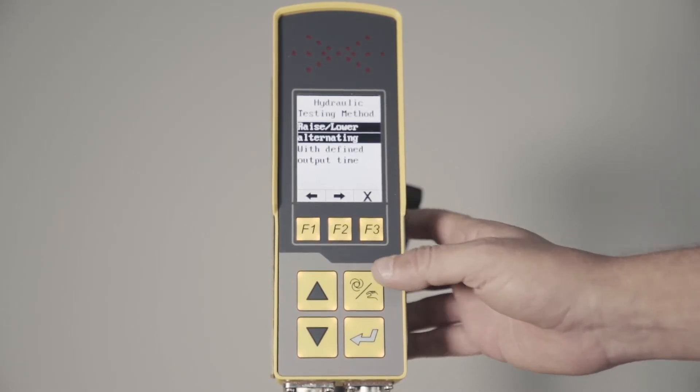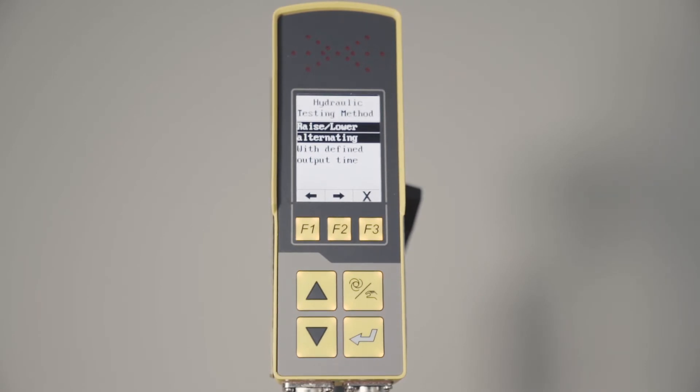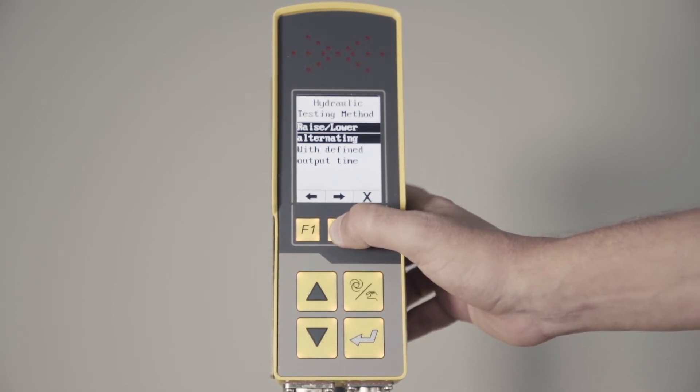Hydraulic testing mode means if you're testing this out on the job site, how do you want your valve to move? Do you want it to move up one direction as we're testing it, or up and down, back and forth as you're testing the speed of your valve? Most people don't mess with this at all, but if you have questions on it, feel free to give us a call.